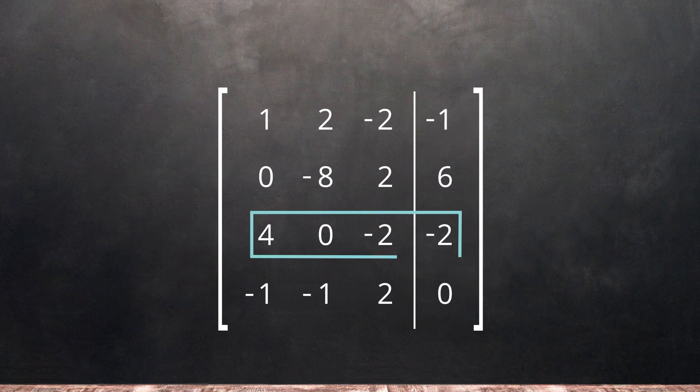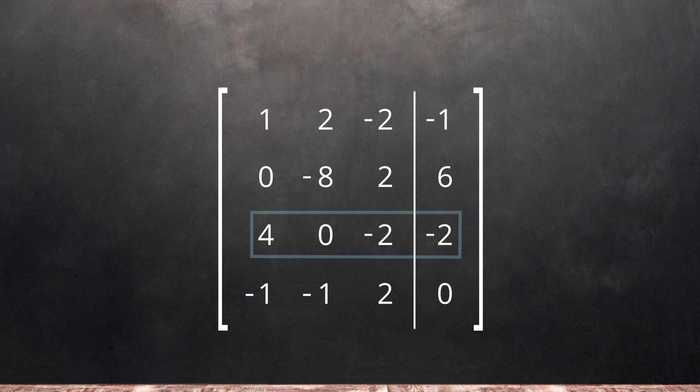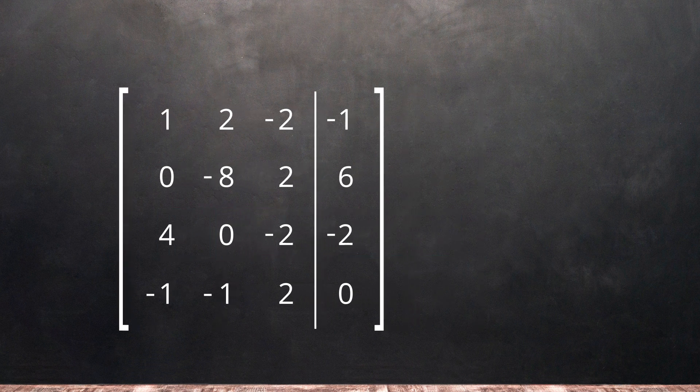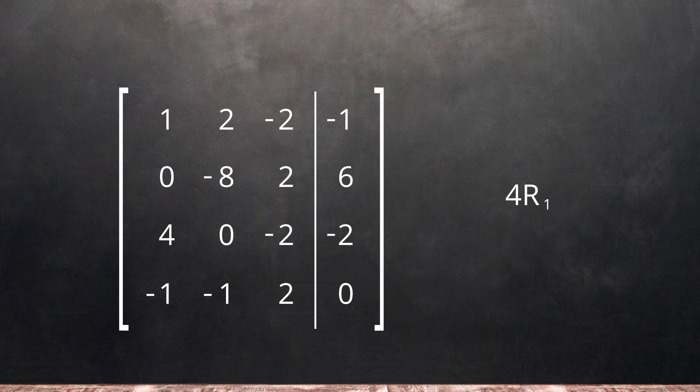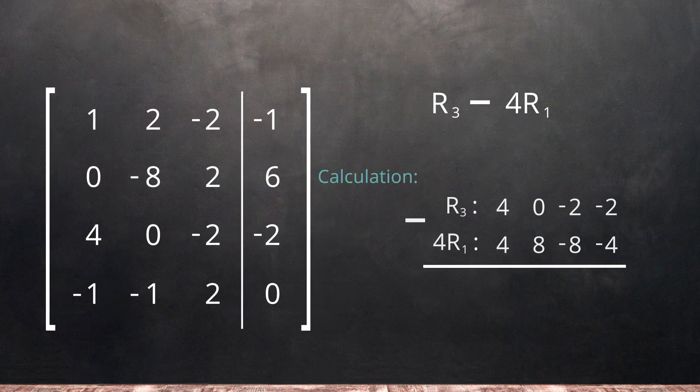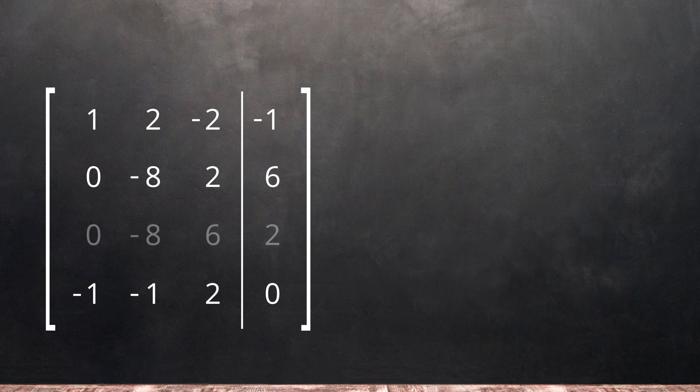Now we can manipulate the third row. We want to make the leading 4 into a 0 using the first row as our pivot. This time we will multiply row 1 by 4 and subtract it from row 3. Performing the calculations, we get our new row 3 and can rewrite our matrix.